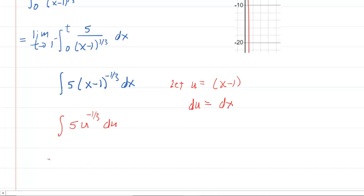Then our integral becomes 5 times u to the negative 1 third du. And then we'll just integrate. This is an easy integral. We add 1 to that power, and we're going to get 2 thirds. And then we multiply by the reciprocal of that power, which is 3 halves. So we end up with 15 halves u to the 2 thirds. We can go back now and replace the u with the x minus 1.